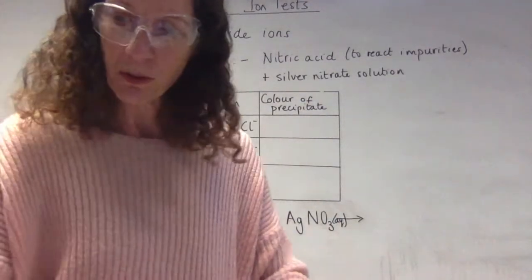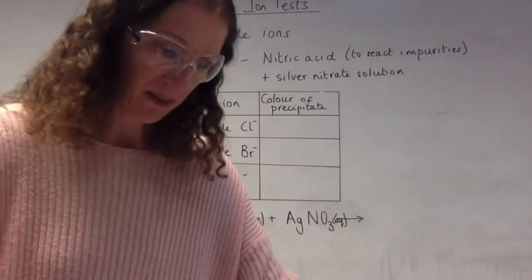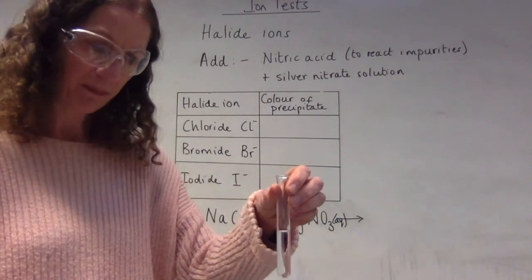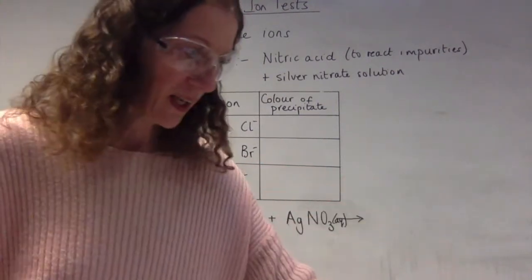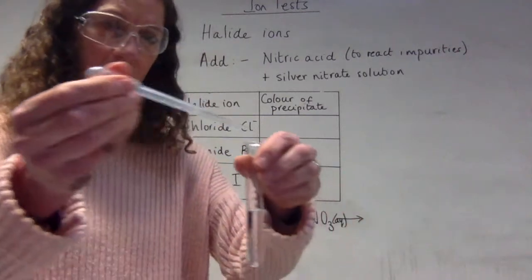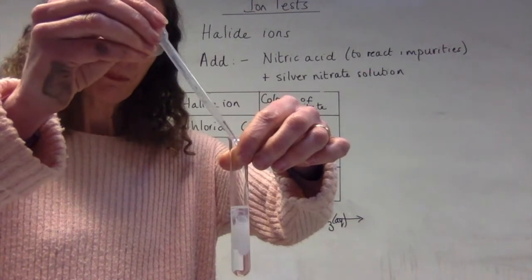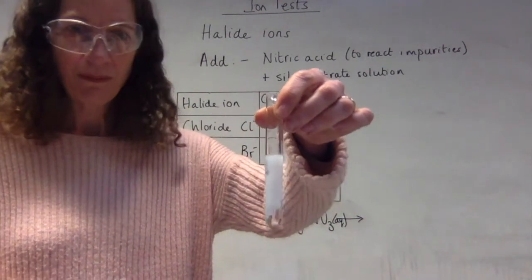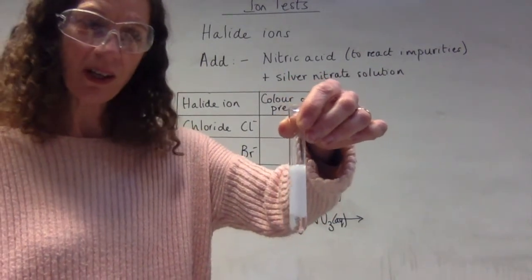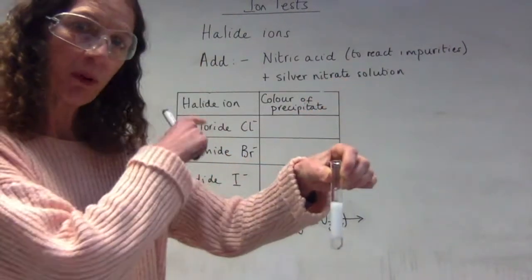So I'm going to add the silver—well I'm first of all going to add some drops of the nitric acid so I'll do that first and that will then remove any carbonate impurities, and then I'm going to add the silver nitrate solution and hopefully we'll see what happens. So I'm getting a precipitate forming because that's a solid in there and that is a white precipitate and we can pop that into the table.